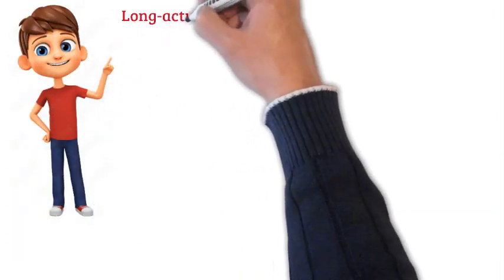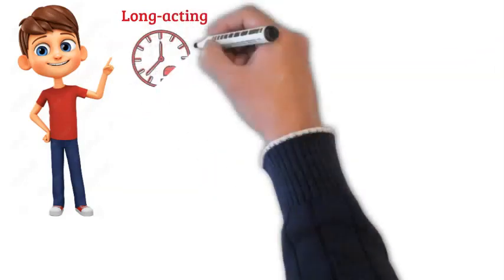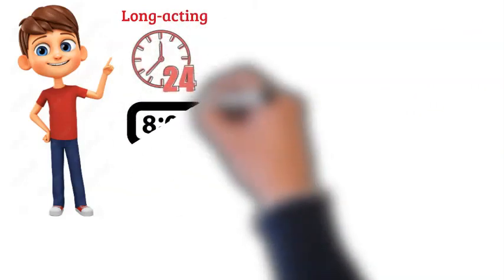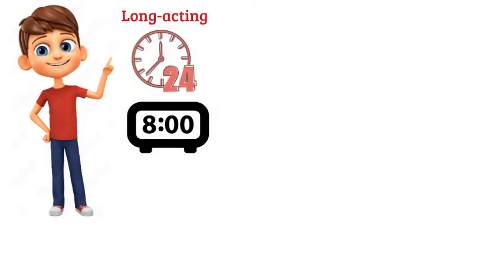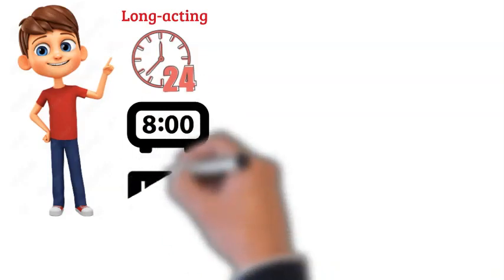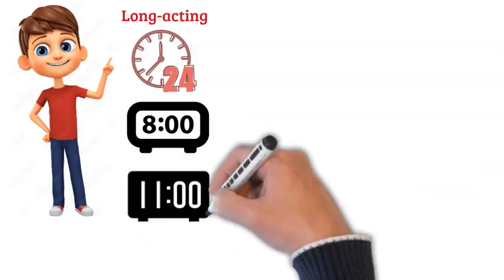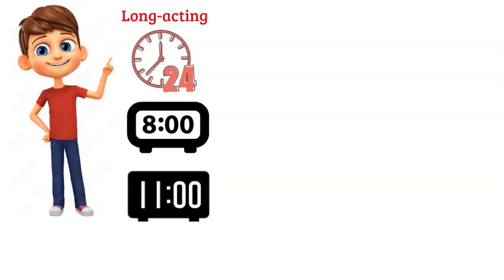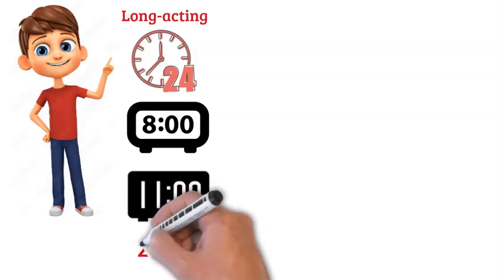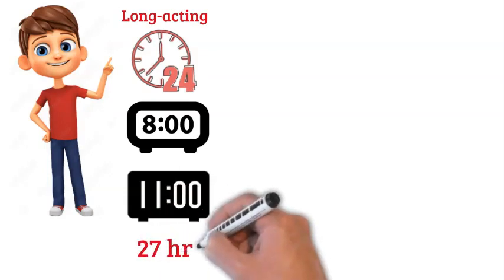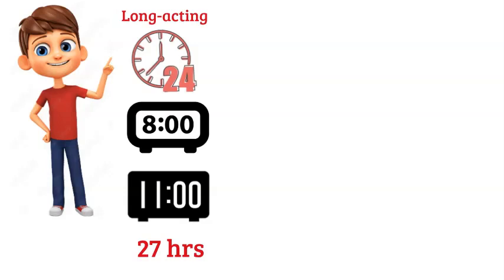Let's give some examples. Johnny takes his long-acting tacrolimus every 24 hours at 8 am every morning. He remembered to wait to take his long-acting tacrolimus until after labs, but he does not arrive at the lab until 11 am for his lab draw. His tacrolimus level will be 27 hours after his last long-acting tacrolimus dose. This means it will not be a true trough and the level will likely seem lower than it actually is.